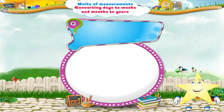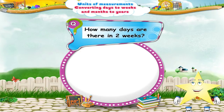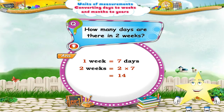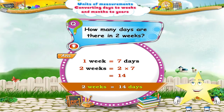So, Stari, suppose we have to calculate how many days are there in two weeks — how would we do that? We know that one week has seven days. So two weeks means two multiplied by seven, which is 14 days. Two weeks have 14 days.